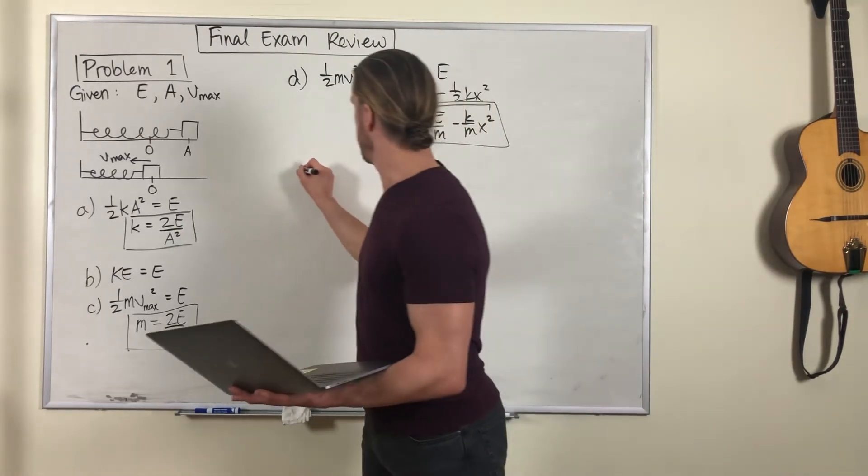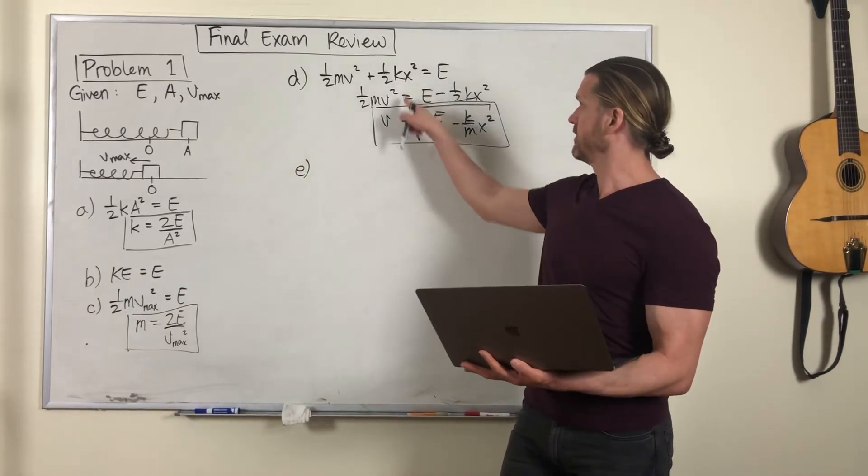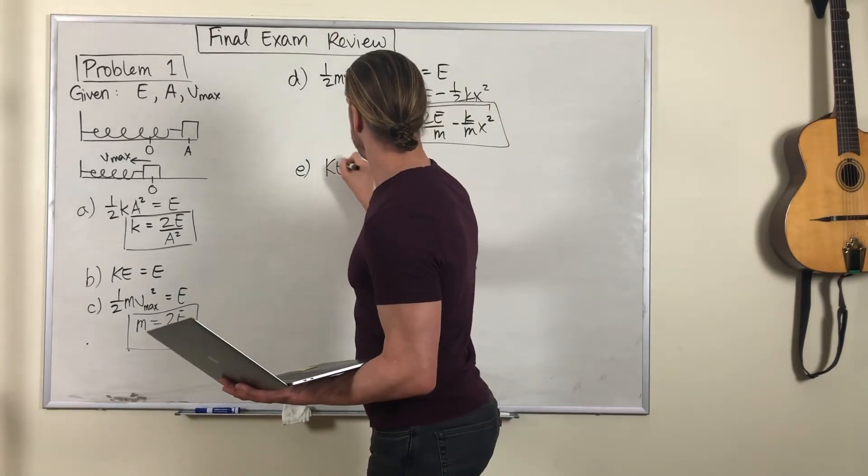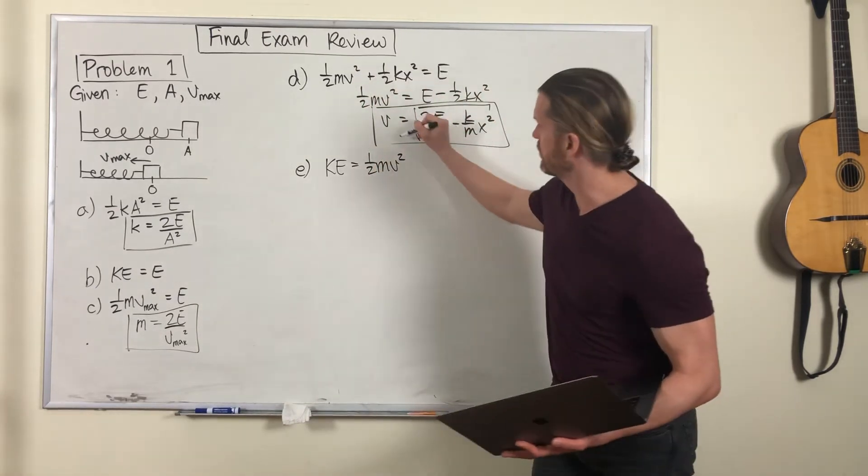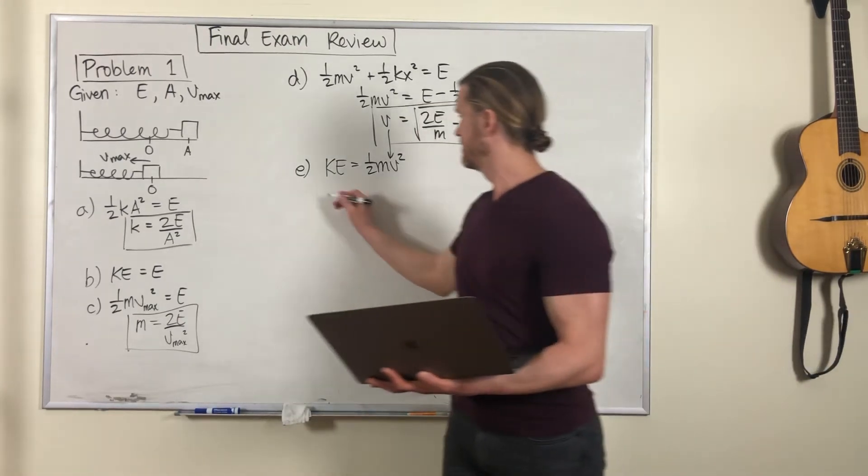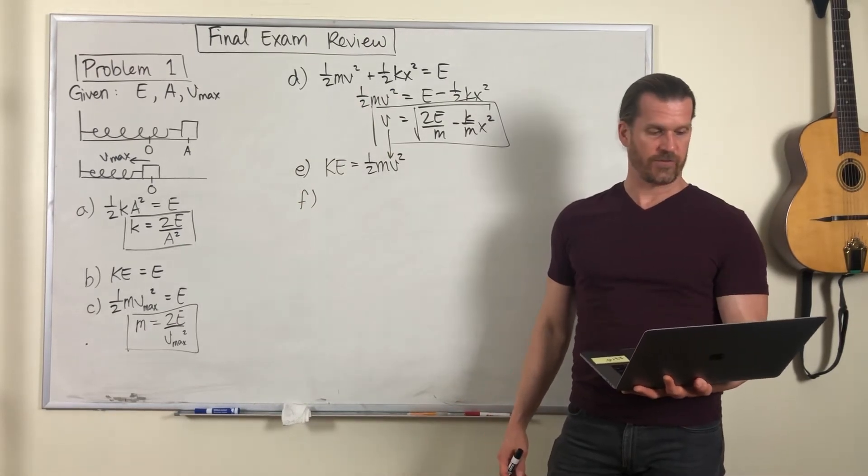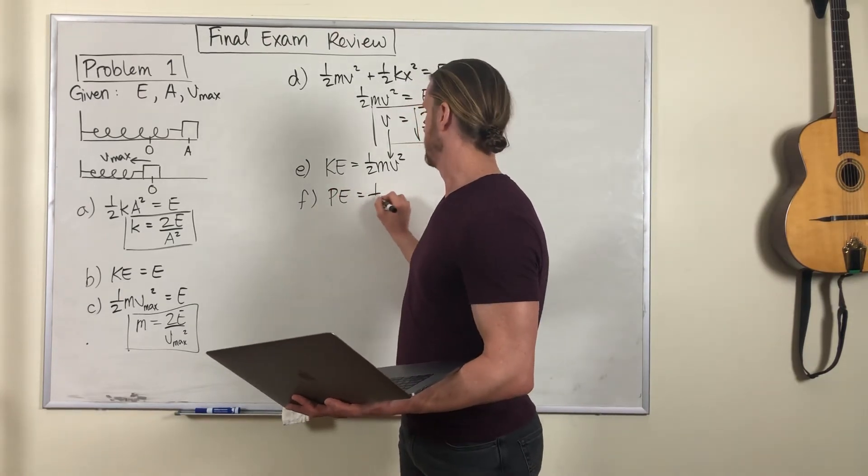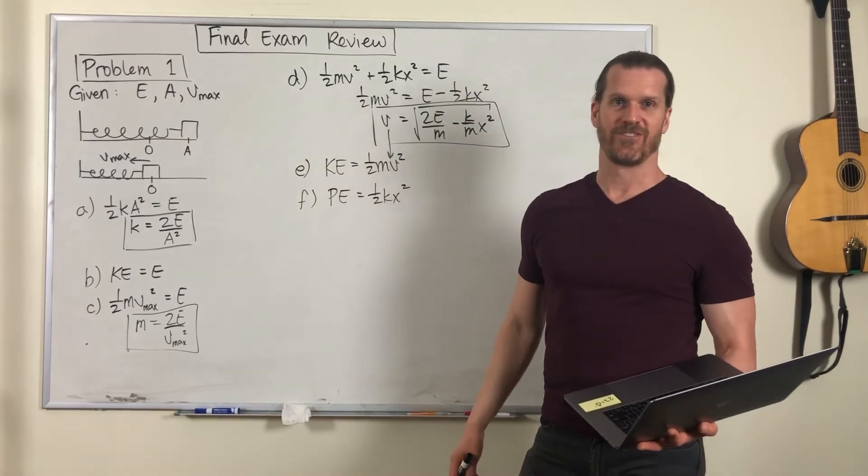Part E. Find the kinetic energy of the block at the same point from situation D. Well, that kinetic energy is going to be one half m v squared, where you use this value of v that we just found. Part F, find the potential energy stored in the spring at that point. Just plug in your values to that equation.